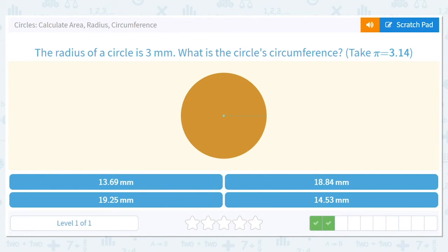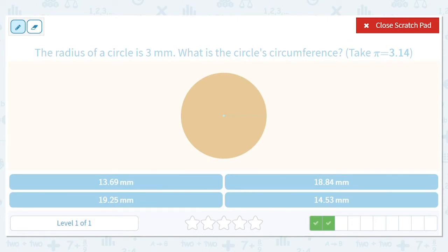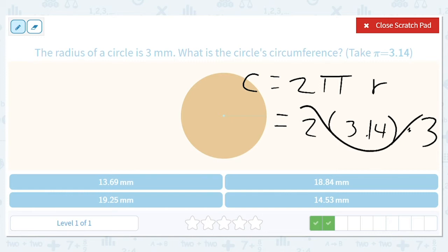What is the circle's circumference? You've got a radius of 3. 2πr, which equals 2 times 3.14 times 3. Let's just ballpark it. 2 times 3 is 6, 6 times 3 is 18, so it's going to be a little bit bigger than 18.